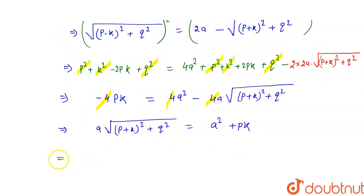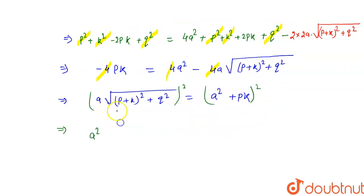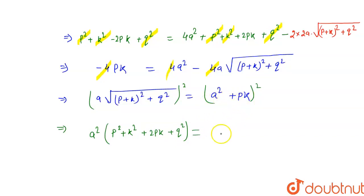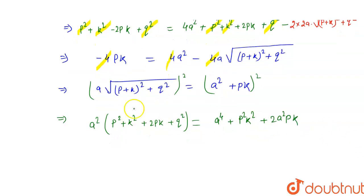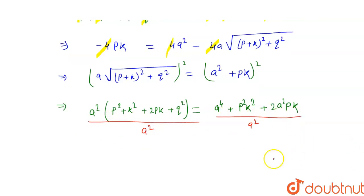Now we square both sides again. The square root cancels, giving a squared times (p plus k) squared plus q squared equals a to the power 4 plus p squared k squared plus 2a squared pk. Expanding the left side: a squared times (p squared plus k squared plus 2pk plus q squared).